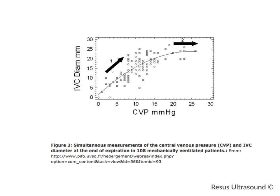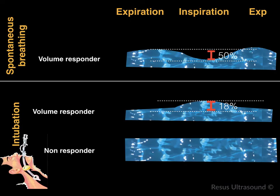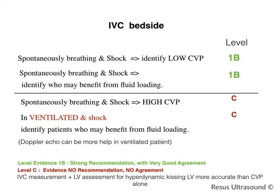Regarding IVC diameter in mechanically ventilated patients: the IVC diameter correlates with CVP when the patient has low CVP, but once CVP goes up, it no longer correlates. To summarize the difference between spontaneous breathing and intubated patients: in a volume responder with spontaneous breathing, the patient will have a collapsed and small IVC, while an intubated volume responder will instead show a distended IVC. The easy rule to remember: if the IVC is very thin, the patient is a volume responder and should receive fluid.